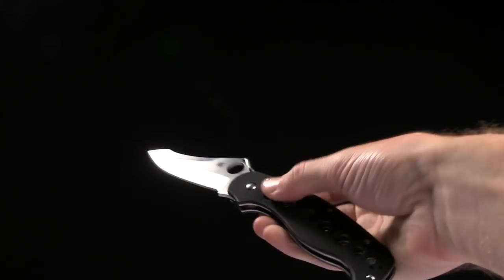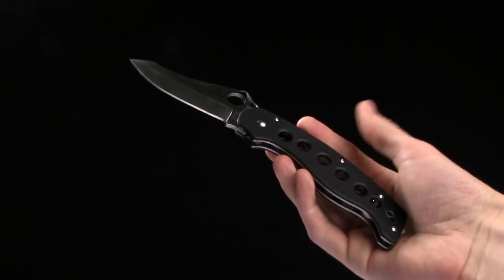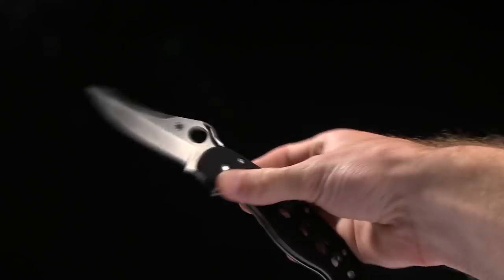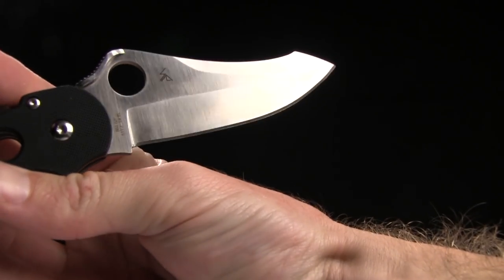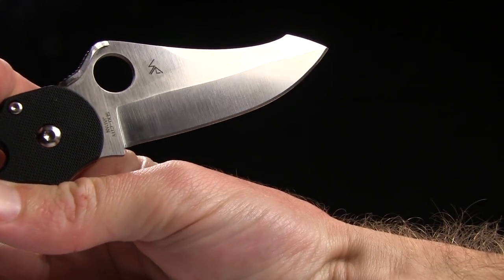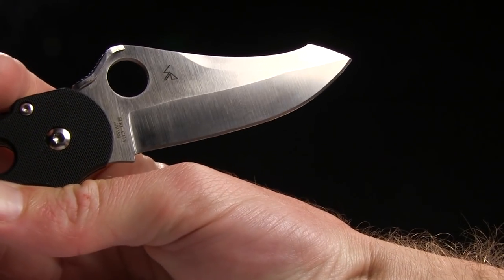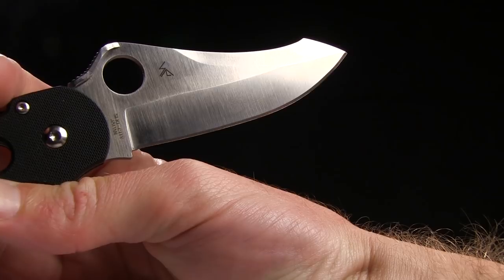Overall length on this guy is 8.47 inches and the blade length is 3.47 inches of S30V steel. It's got an interesting shape to it with a saber grind, which is nice.